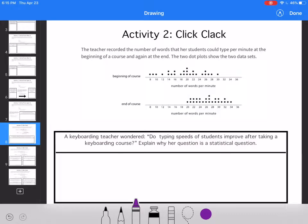At Click Clack, the teacher recorded the number of words her students could type per minute at the beginning of a course, and then again at the end. The two dot plots show the two data sets. So this is at the beginning, and then they transition, so they have class, and then this is the end of course data.